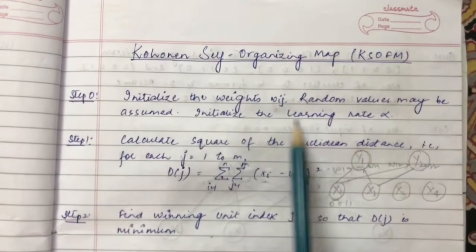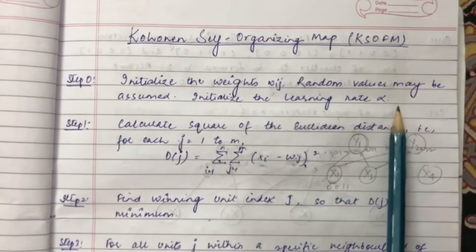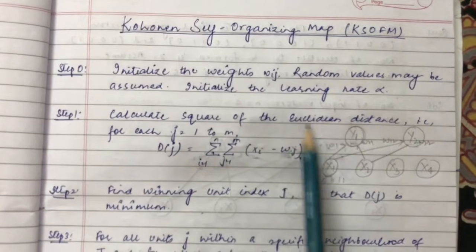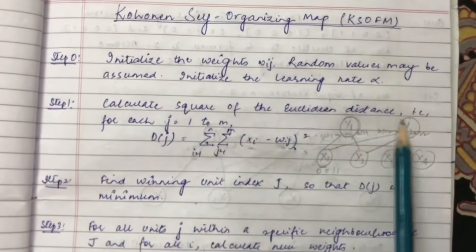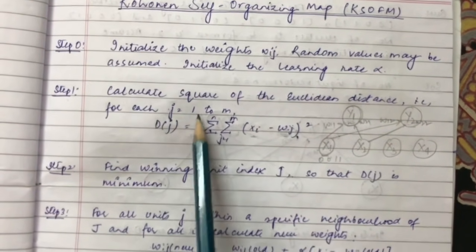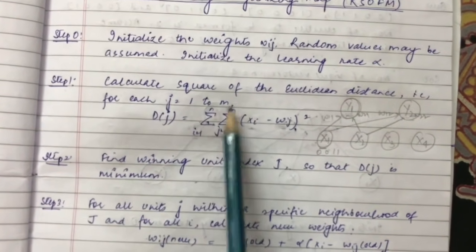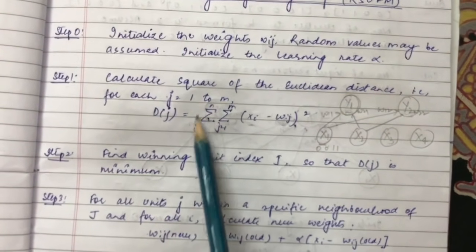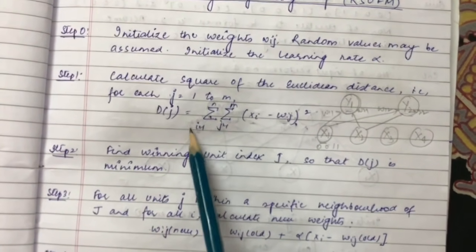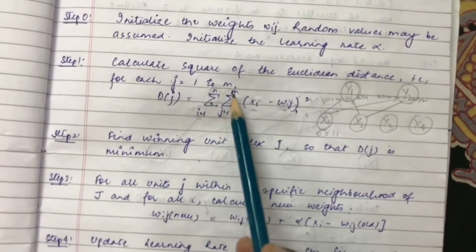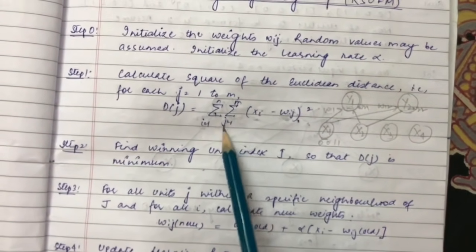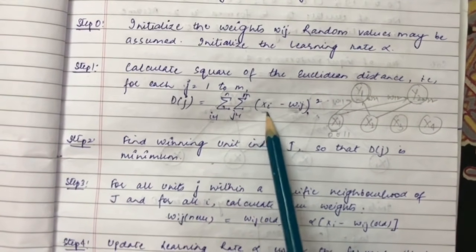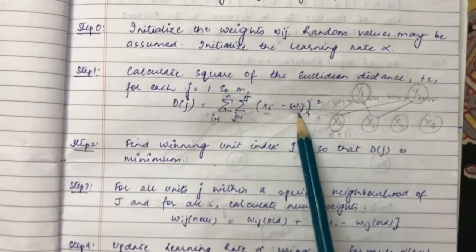Step 1 is to calculate the square of the Euclidean distance. For each j equal to 1 to m, dj equals the double summation for i equal to 1 to n, where n represents the number of input vectors and j equal to 1 to m represents the number of clusters. xi is the input and wij is the weight.